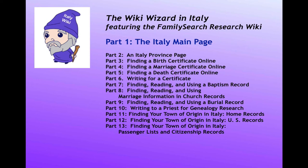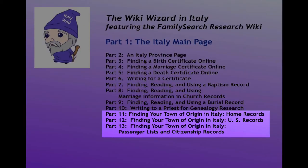This is a series of videos teaching you how to use the resources of the FamilySearch Research Wiki to support your genealogical research for ancestors who lived in Italy. There are 13 parts to this series, and you can watch them in order. However, it is important that you know the town that your ancestors lived in in Italy to be successful in Italian research. Therefore, you might want to start with parts 11, 12, and 13, which will help you find your town of origin if you do not now know it.